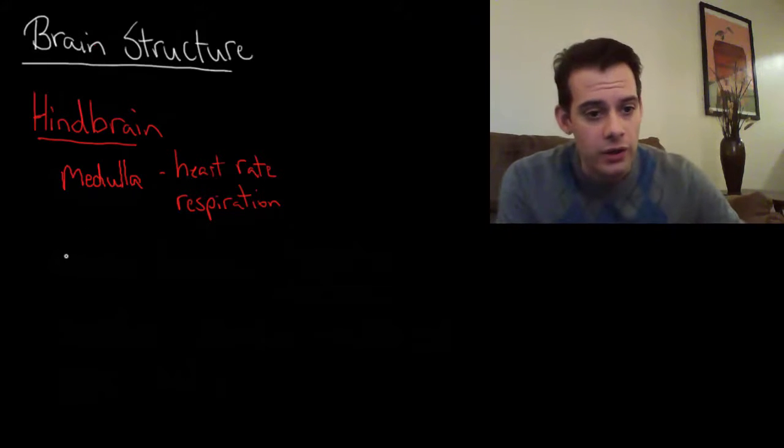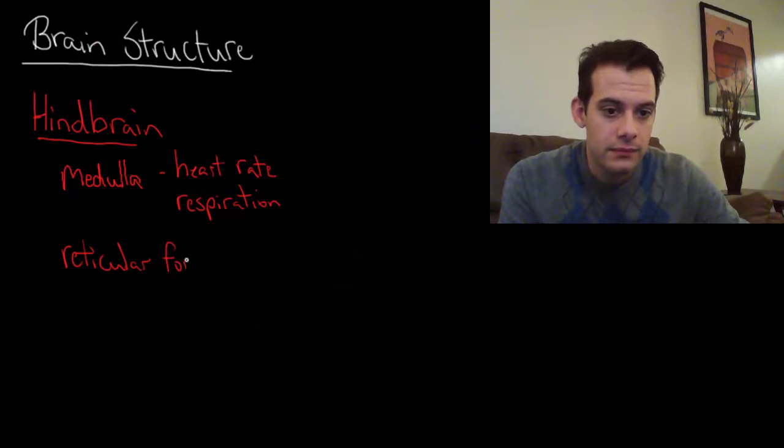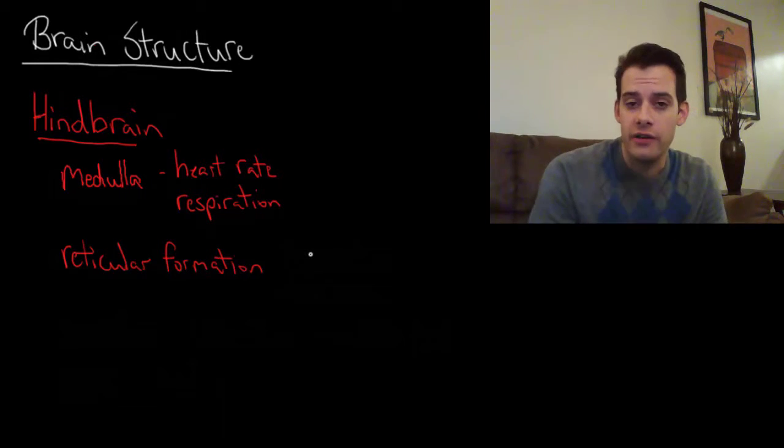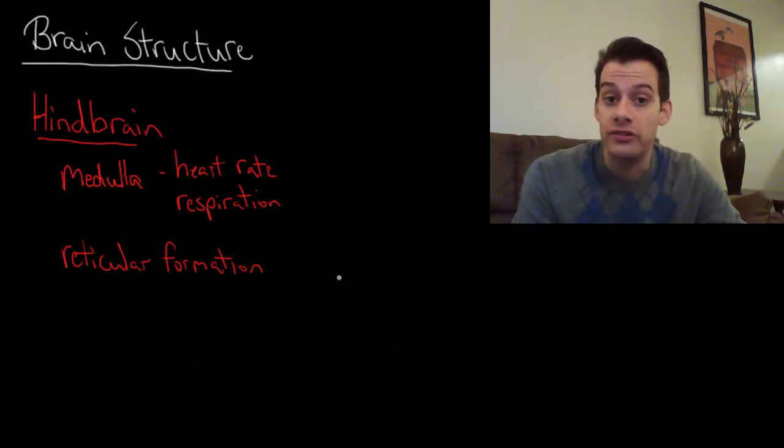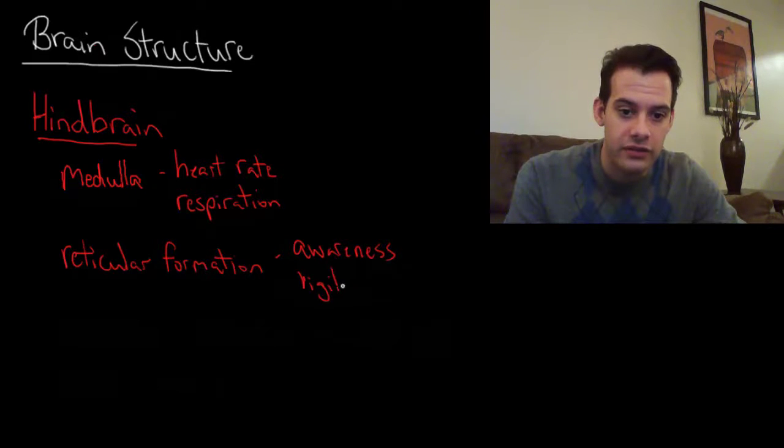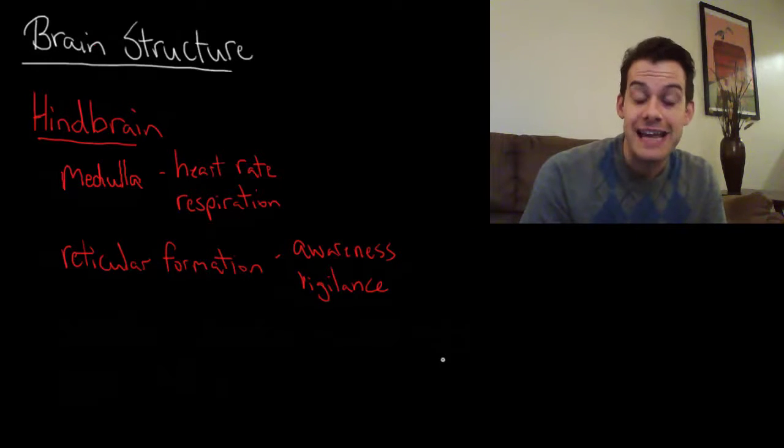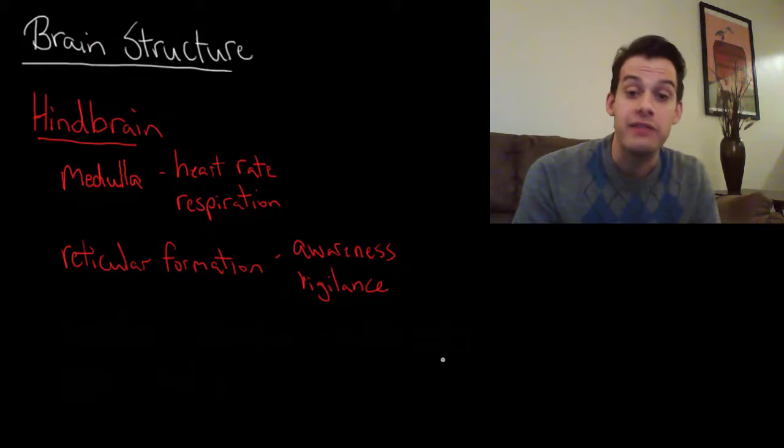If we move up from the medulla, we get to the reticular formation. And the reticular formation is a group of neurons. It's a system that is involved in things like our level of consciousness, our awareness of our surroundings. And it would be involved in things like a state of vigilance. So when you have that very alert feeling. So for instance, if you were suddenly being preyed upon by some predator and you get this feeling of intense alertness and focus, part of that would be controlled by the reticular formation.